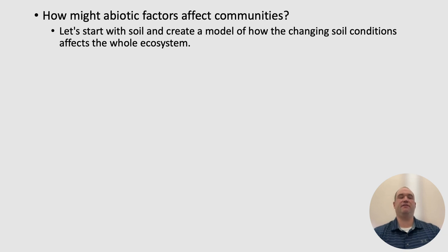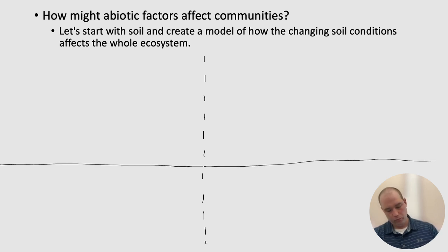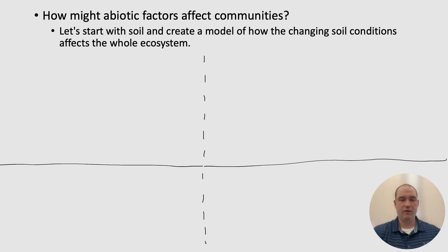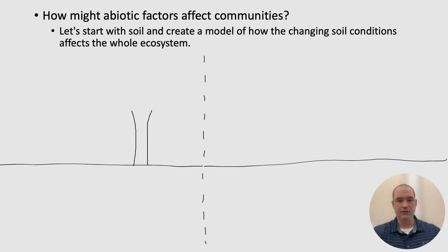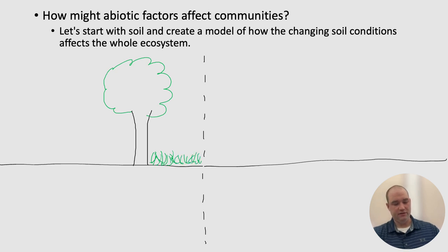How might abiotic factors affect a community? If you think about a normal community, maybe you have all of these trees — a type of living thing that exists when normal environmental conditions are present. Maybe we're going to have grasses and plants growing in these different types of conditions, some bugs flying around, or even a bird flying. These are different interactions that we have — maybe also some bushes and shrubs.